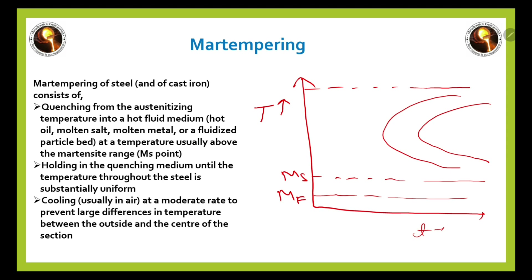In martempering, the process is different: heat the steel to a critical temperature, hold for some time, then do rapid cooling — but only down to just above the Ms temperature. Hold it there for some time, and then perform air cooling. The result is a martensite structure.